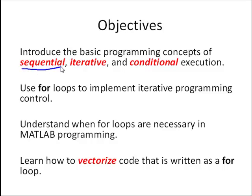Sequential programming is basically what we've been doing all along. We'll use for loops to implement iterative programming control, and understand when for loops are necessary in MATLAB, which is not nearly as often as in other programming languages, and learn how to vectorize code that is written as a for loop — and learn what that term 'vectorize' means and why it's important.